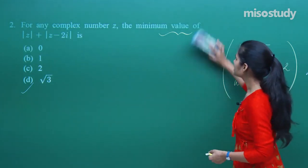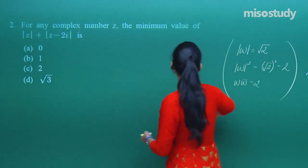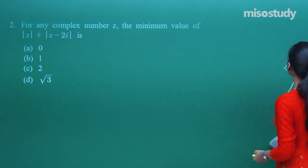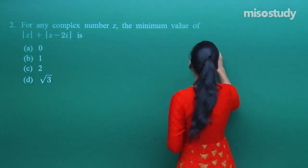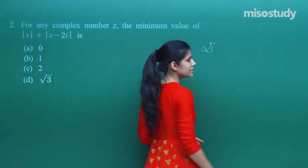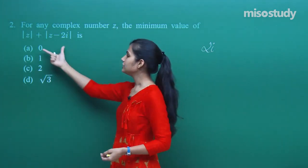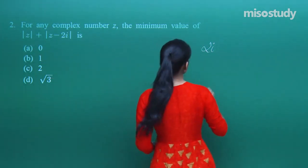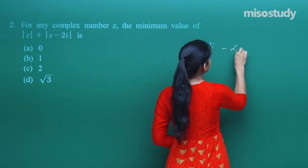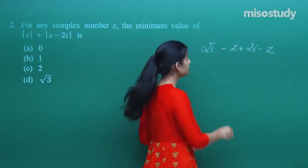Moving to the next question: for any complex number z, what is the minimum value of this expression? There is some manipulation required, otherwise the question is pretty easy. Here, 2 iota is involved, and using the triangle inequality you will be able to decode this expression. You can write the expression as z plus 2 iota minus z.